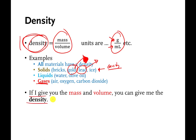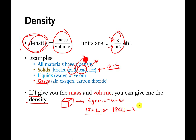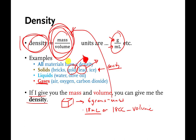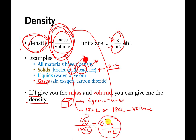If I gave you the mass and the volume of something, you could figure out the density. For example, let's say I have a little block that weighs 6 grams — that's its mass — and the volume is 18 milliliters. If I asked for the density, you'd use the formula: 6 grams divided by 18 milliliters, which gives 0.3 repeating. Those units don't cancel, so you write the density as 0.3 grams per milliliter.